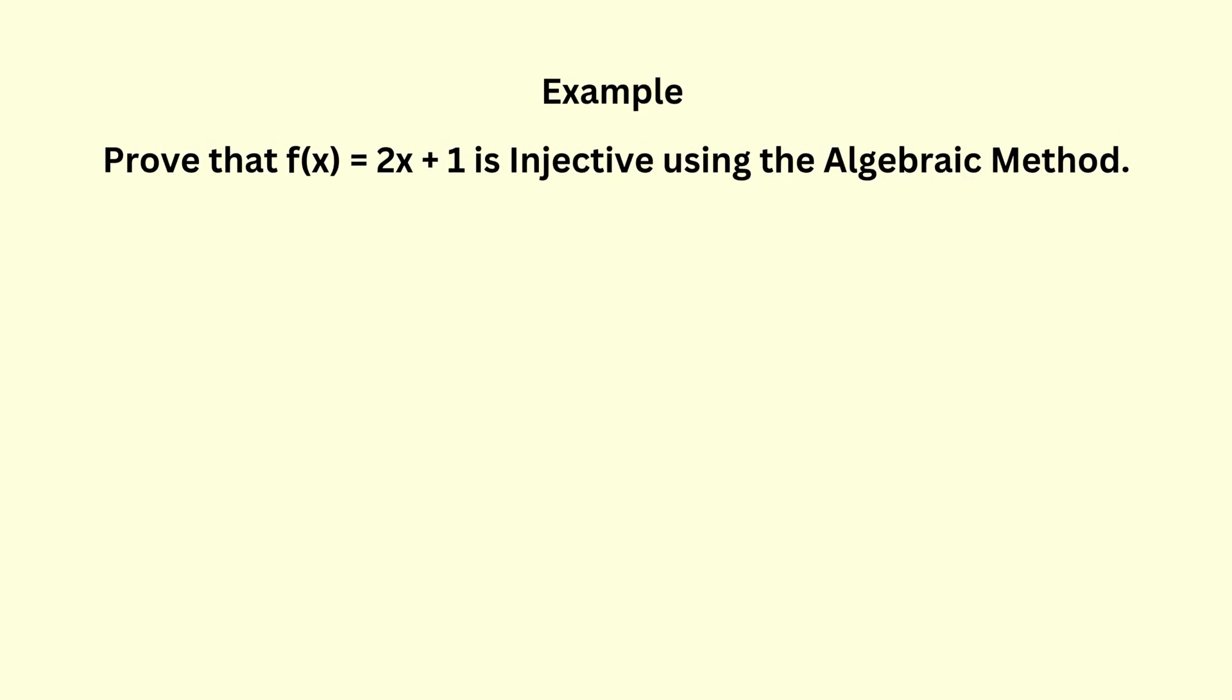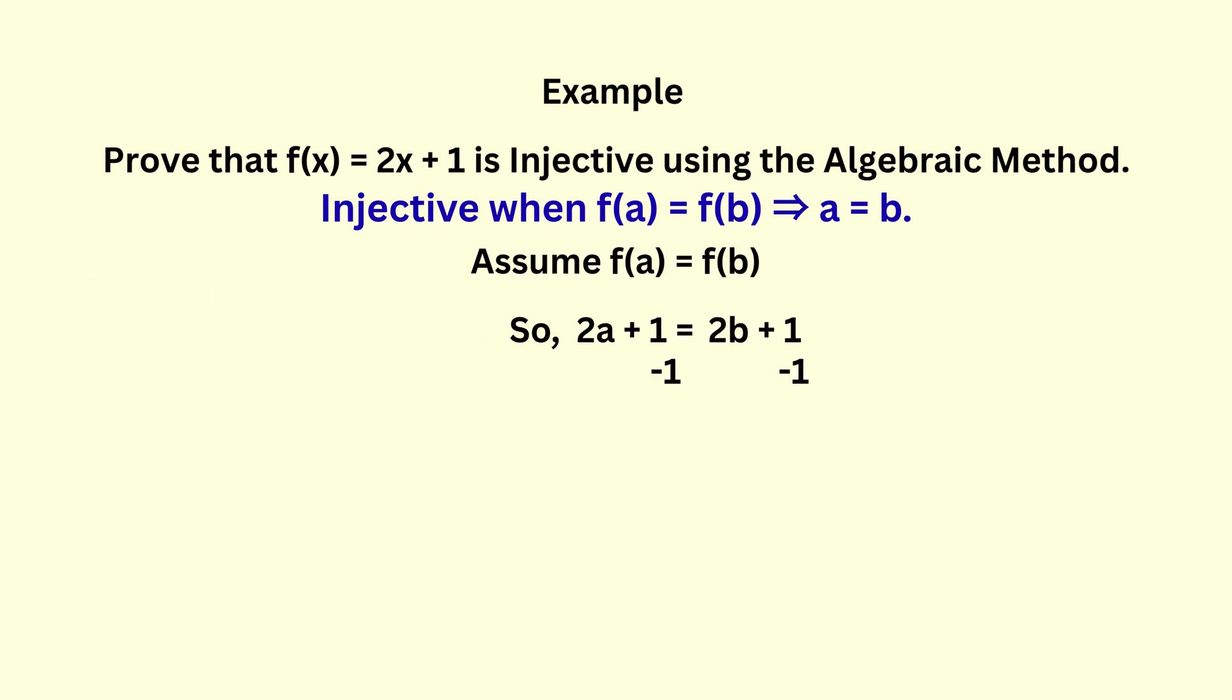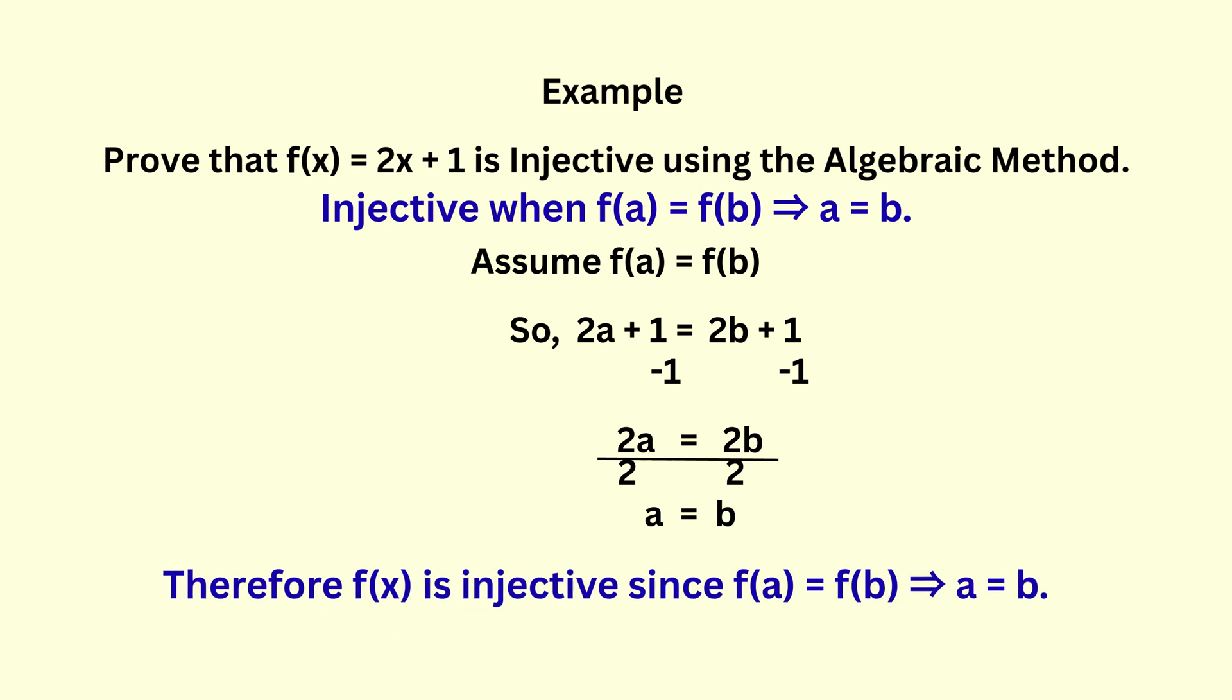Prove that the function f of x equals 2x plus 1 is injective using the algebraic method. The first step is to equate f of a to f of b. Now, f of a is 2a plus 1, while f of b is 2b plus 1. Subtract 1 from both sides to get 2a equals 2b. Divide both sides by 2 to get a equals b. So, f of x is injective since f of a equals f of b leads to a equals b. Every unique X gives a unique Y. That's a one-to-one mapping.